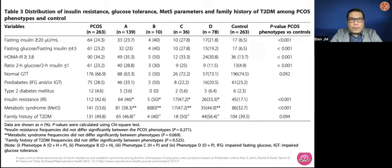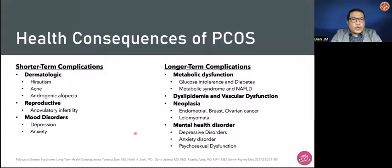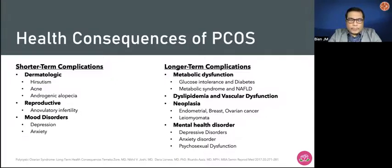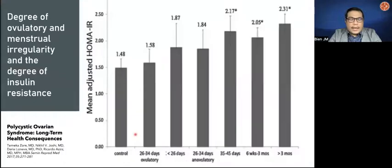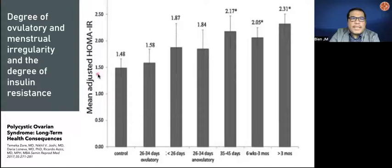Why is this important? We know that there are health consequences of PCOS — short-term complications and long-term complications. For this talk, we'll focus on metabolic dysfunction in association with insulin resistance. We see here the association or the degree of ovulatory and menstrual irregularity and the degree of insulin resistance — for those patients with longer anovulatory or longer menstrual irregularity, there is a linear relationship with the mean-adjusted HOMA-IR.